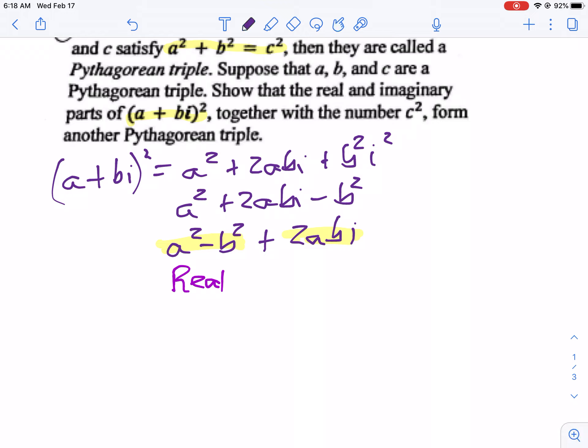Let's take our real part. So that's A squared minus B squared. I'm going to square that. And I'm going to add in my imaginary part, which is 2AB. I'm going to square that.